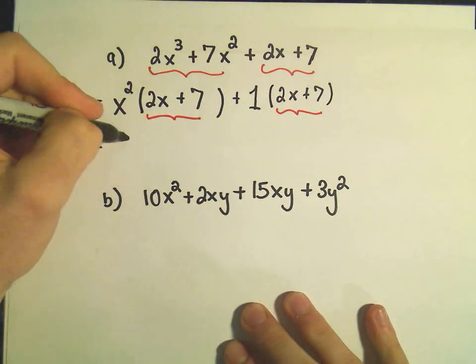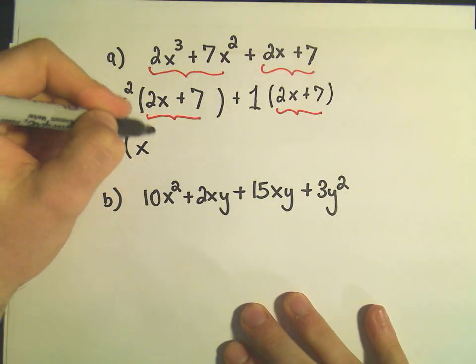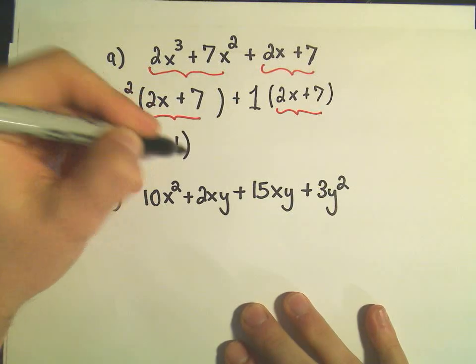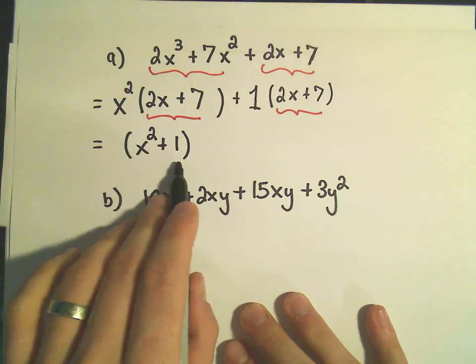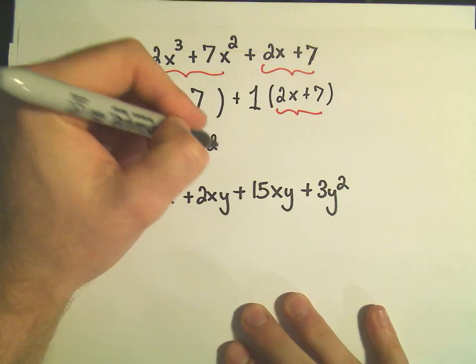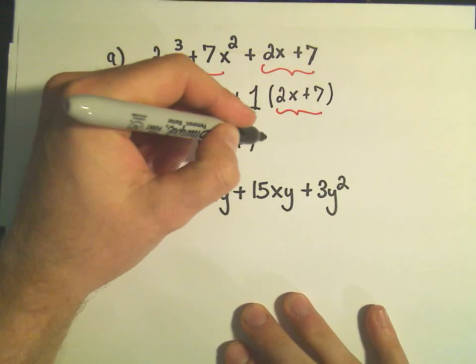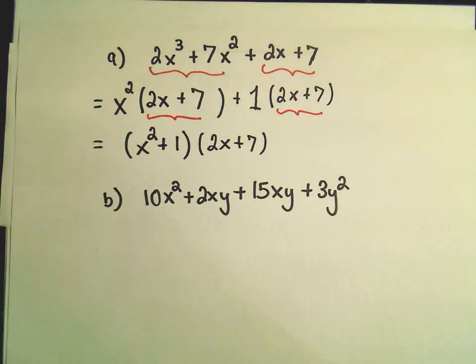And then, the way this factors is, what you do is you take the stuff out front, the x squared plus 1. So you take the stuff out front and stick it in one set of parentheses. And then whatever that common thing is, you just stick that in another set of parentheses, and now it's factored.